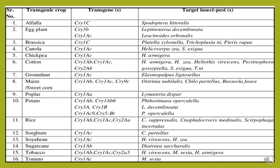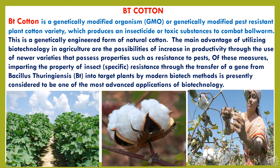Here is a list of transgenic crops inoculated with transgenes and their target insect pests. Various crops under the transgenic category include alfalfa, eggplant, brassica, canola, chickpea, cotton, groundnut, maize, poplar, potato, rice, sorghum, soybean, sugarcane, tobacco and tomato in various countries, each with different transgenes effective against specific target insect pests.